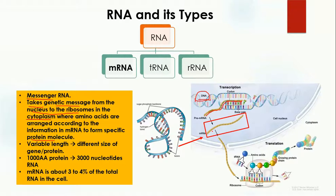This messenger RNA then travels from the nucleus to the cytoplasm, where it is translated to form proteins. The length of messenger RNA is variable because it depends on the size of the gene or the protein it will produce.